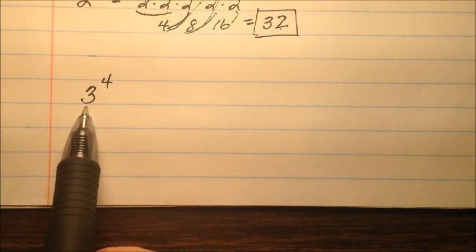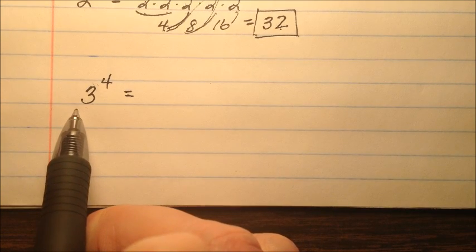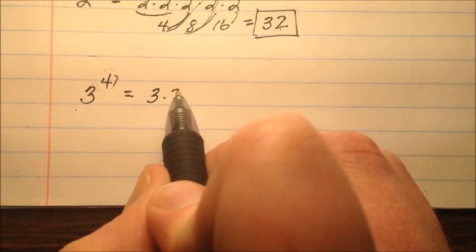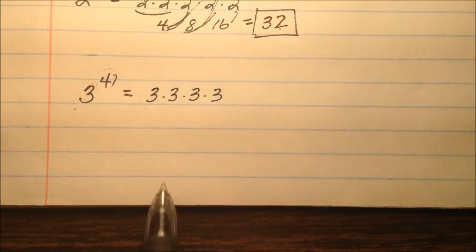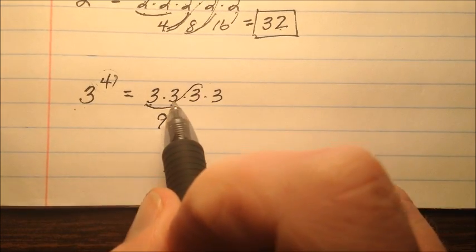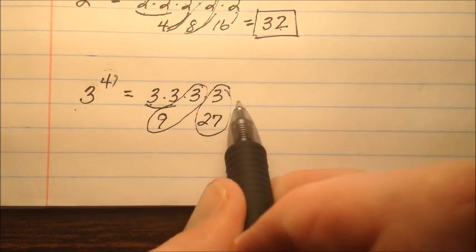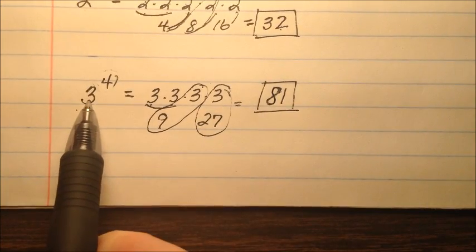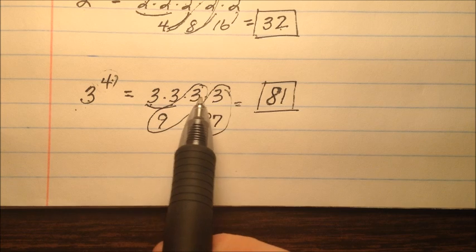In this next example, we have three to the power of four. Three is the number being multiplied over and over again, and it's being multiplied by itself four times. As we go through and multiply: three times three is nine, nine times three is 27, and 27 times three is 81. So three to the power of four equals 81 when we multiply three by itself four times.